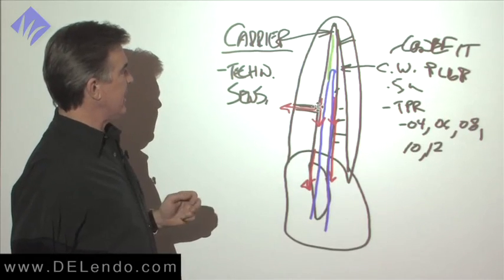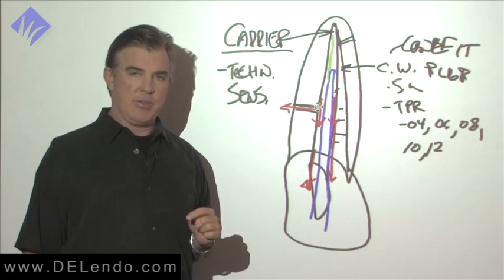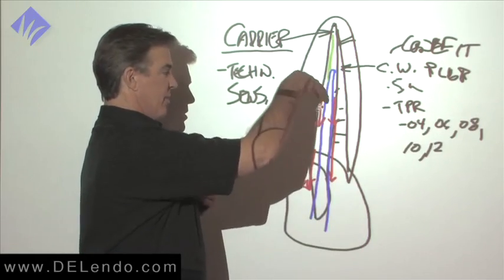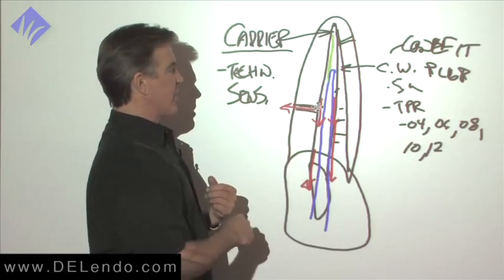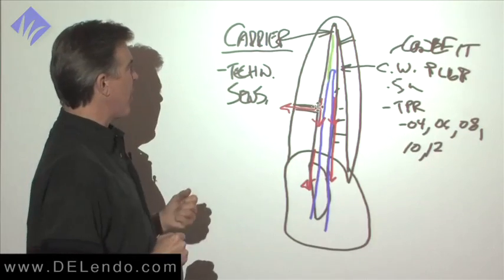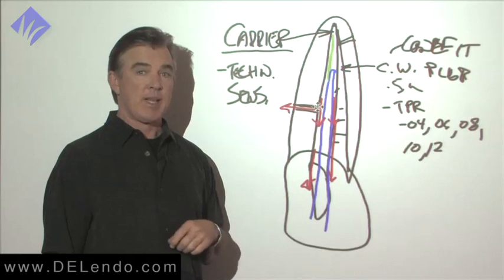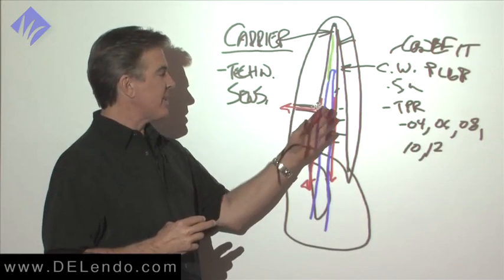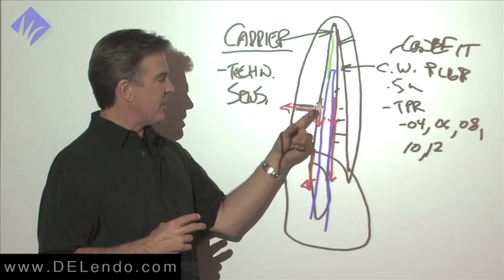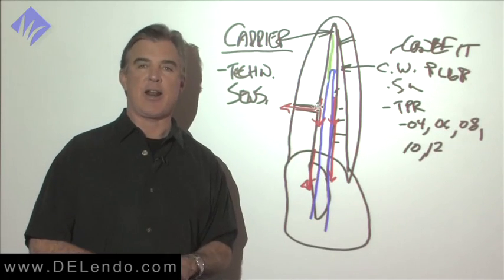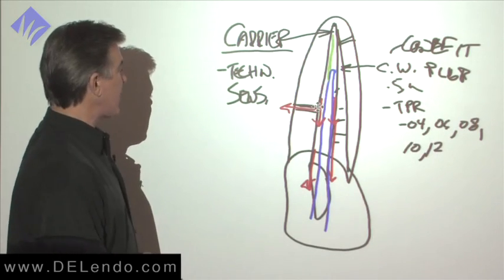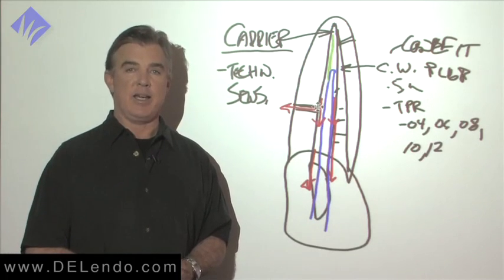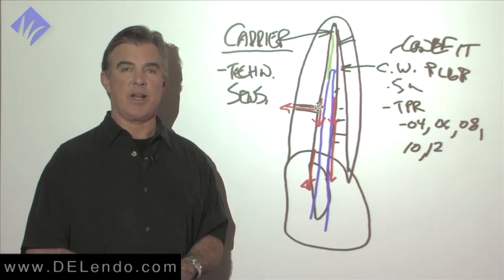It also tells us that the sealer application is going to be critical. For a cone fit technique, we're going to put sealer on the cone, up to the canal terminus, move it back and forth a couple times, check and make sure it hasn't been worn off. With carriers, we're going to coat it beforehand, before we put the sealer in, but the sealer is critical. Without the sealer, we don't get the lubricity of the gutta-percha, and it will not move into lateral accessory canals the way we intend. When it's done correctly, it's a fast, effective, and a very three-dimensional way to fill root canals.